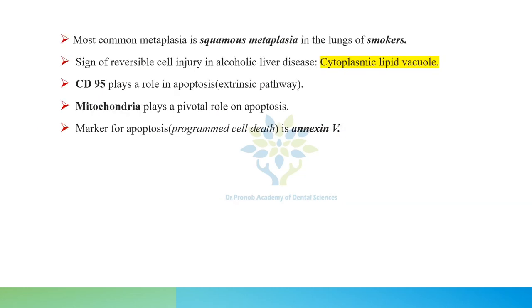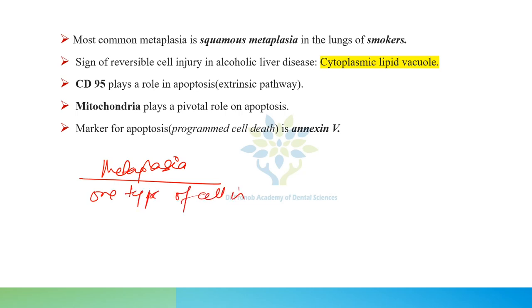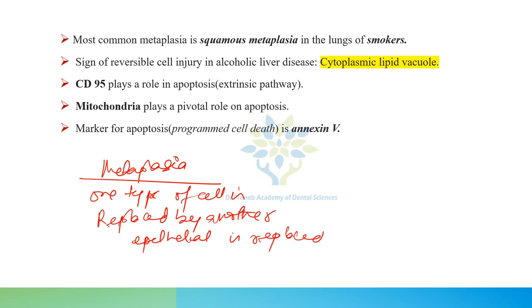The most common metaplasia is squamous metaplasia, seen in the lungs of smokers. Metaplasia is a reversible change in which one differentiated cell type is replaced by another, such as epithelial being replaced by mesenchymal.